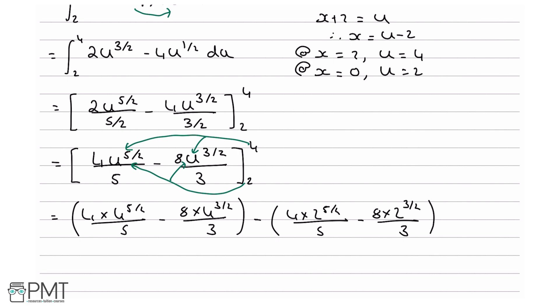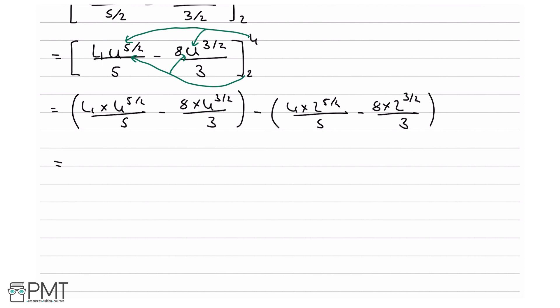Now if you were to plug these into your calculator, what you would get is this equals 128 over 5 minus 64 over 3, minus 16 root 2 over 5, and then minus and minus is a plus, so it's going to be plus 16 root 2 over 3.